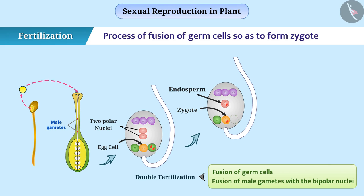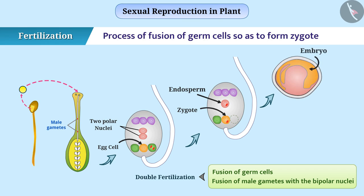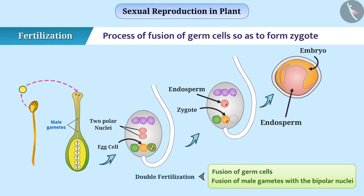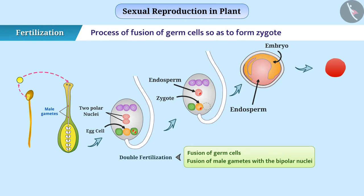After fertilization, the zygote divides several times in the ovule causing its transformation into an embryo. Endosperm provides nutrition to the embryo. At the same time, the ovary changes into fruit. During this activity, other parts of the flower like sepals, petals, stamens, and stigma fall off.